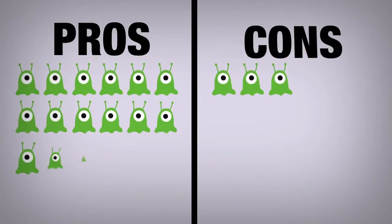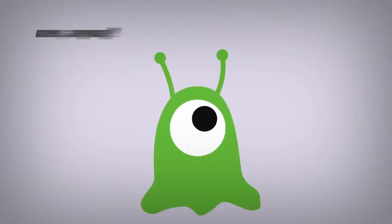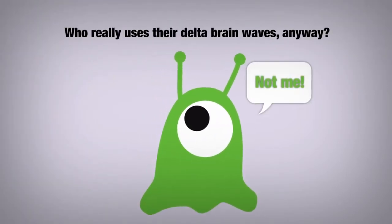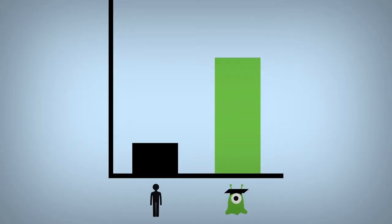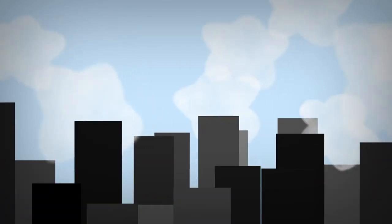The pros of brain slugs far outweigh the cons, and to be honest, who really uses their delta brain waves anyway? It has been proven when a brain slug attaches itself to a human, that human instantly becomes 349% more intelligent, as well as 671% more attractive to the opposite sex.